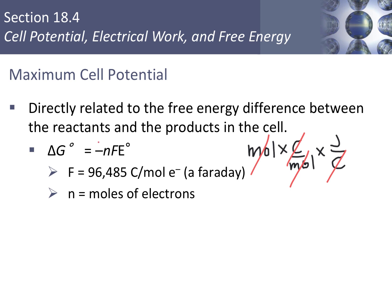Also notice the negative sign in the equation. We will have a positive cell potential — which is what we're looking for in thermodynamically favored redox reactions. However, with delta G, we want to see a negative value for thermodynamically favored processes. So overall, our answer will be negative, which is the sign we'd like to see for delta G, even though our cell potential is positive.